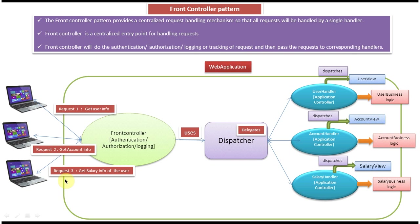Suppose request 3 comes in to get the salary info of a particular user. The request first comes to the Front Controller, which performs authentication, authorization, and logging. The Front Controller then uses the Dispatcher to delegate the request to the Salary Handler. The Salary Handler calls the Salary Business Logic, which calls the DAO layer, retrieves the salary information from the database, and passes it back to the Salary Handler. The Salary Handler dispatches to the Salary View, which displays the salary information in the browser.